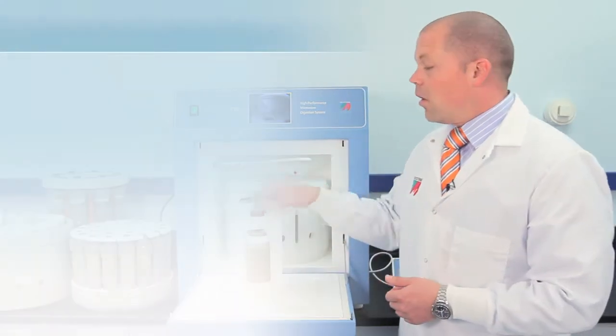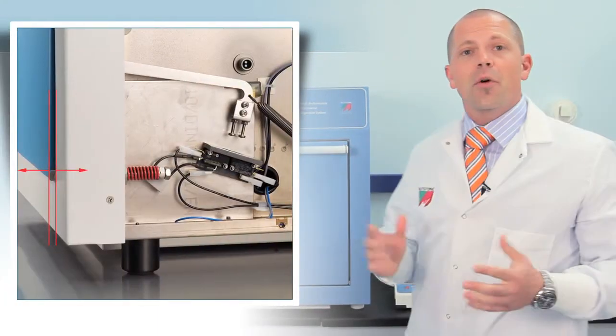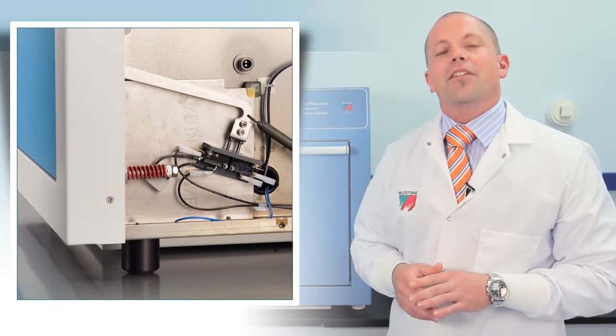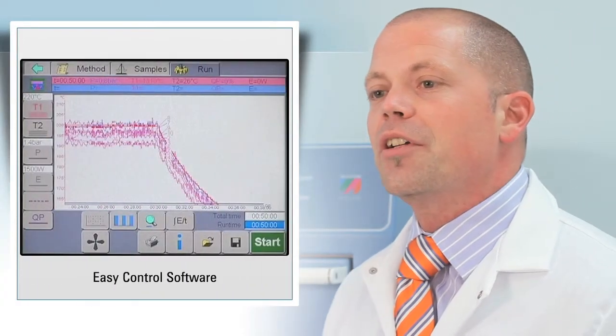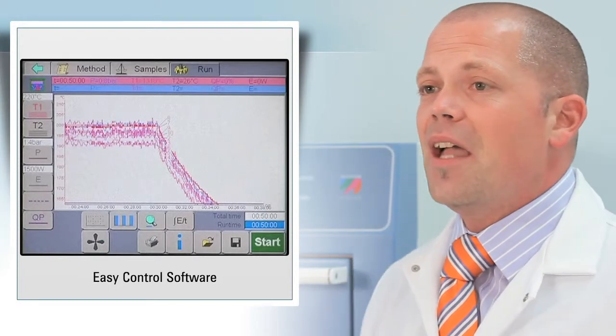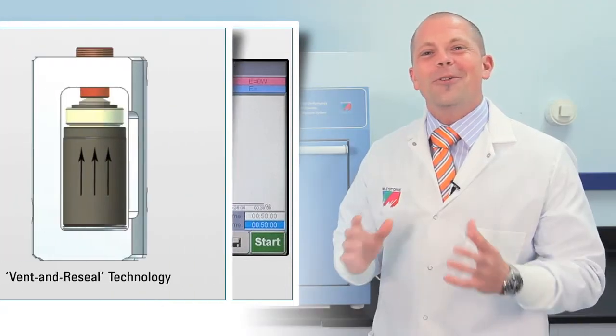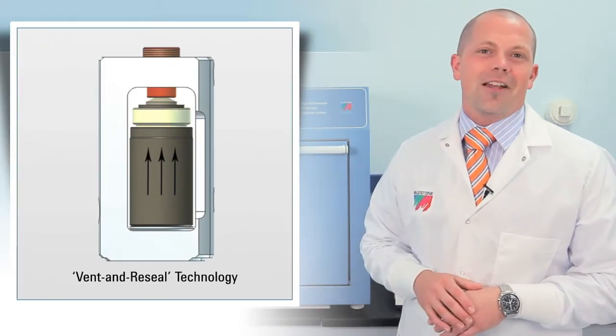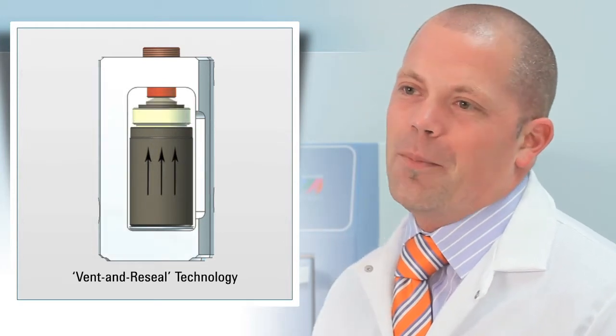And that's the Ethos One. All stainless steel construction, a pressure release safety door, and 5-year warranty against cavity corrosion. Operation is extremely easy with the touch screen controller running easy control software. Its advanced PID control allows maximum reaction control. Milestone uniquely offers true vent and reseal technology which eliminates excessive venting, giving more complete digestions and better data quality.